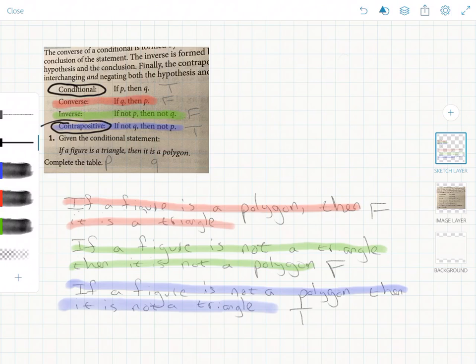And then the converse, if the converse is false, the inverse is going to be false. And if the converse is true, the inverse is going to be true. So these two converse and inverse are kind of joined together at the hip, they're always going to have the same truth value.